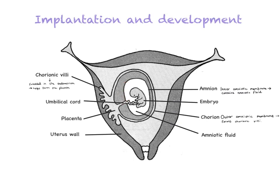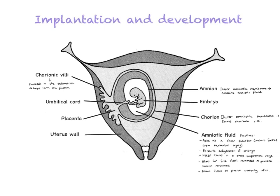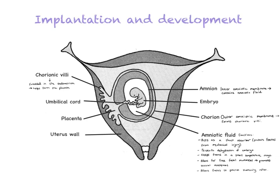The amniotic fluid has some very important functions. Most importantly, it acts as a shock absorber, protecting the fetus from any kind of mechanical injury. So if the mother bumps her stomach or takes a small fall, it gives the fetus some protection. It also prevents dehydration of the embryo, and the fluid maintains the fetus within a small temperature range.